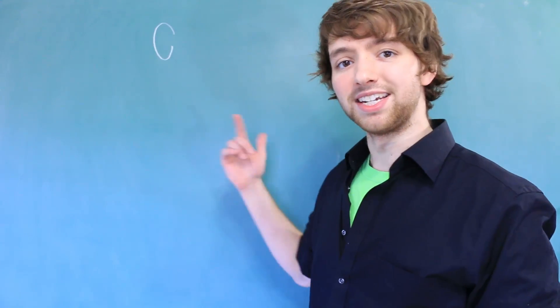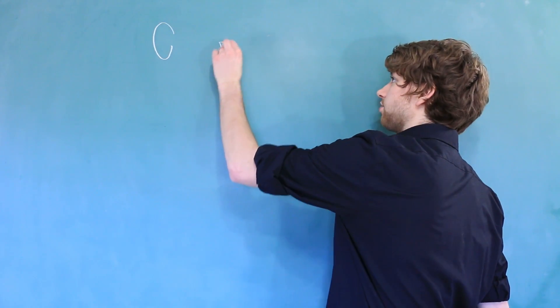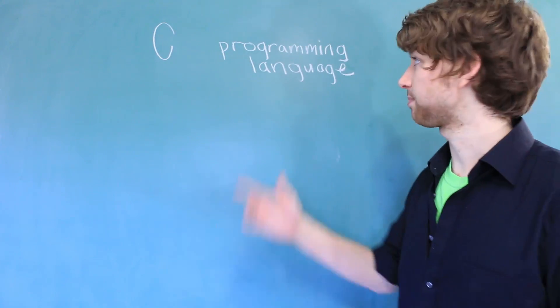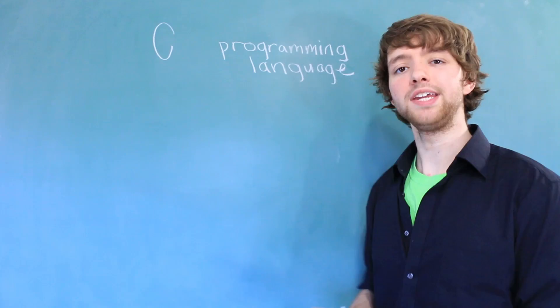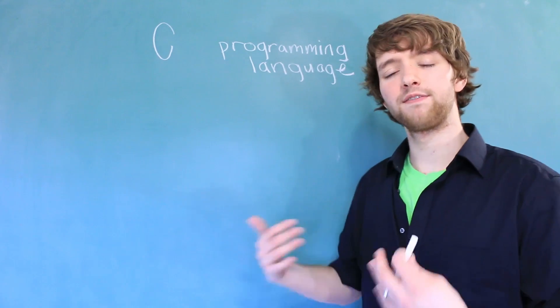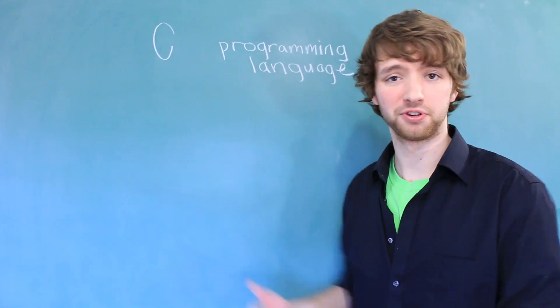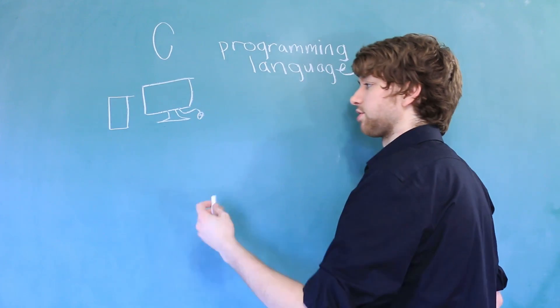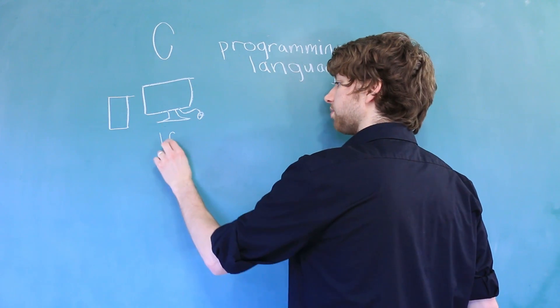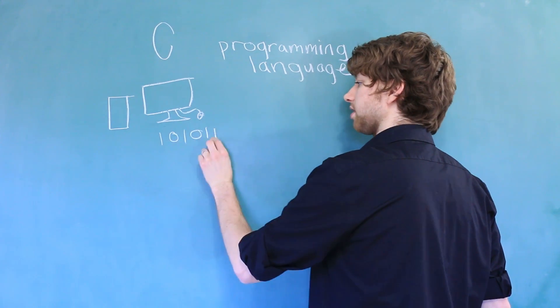And now that we are done with that glorious introduction, let's get started. C is an example of a programming language. In order for us to fully grasp what a programming language is, we need to understand a couple things. First, as humans, we want to communicate with computers. The problem is though, is that a computer only understands what's called machine code, which is basically sequences of ones and zeros.